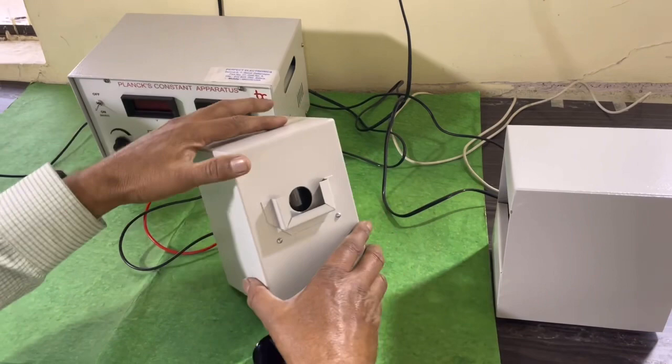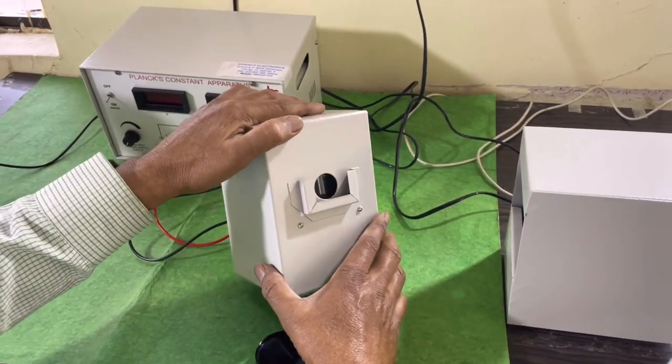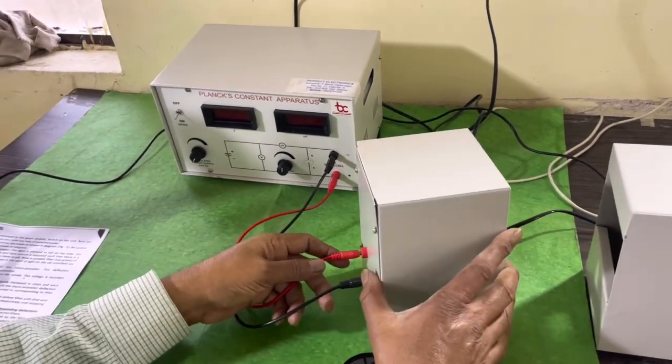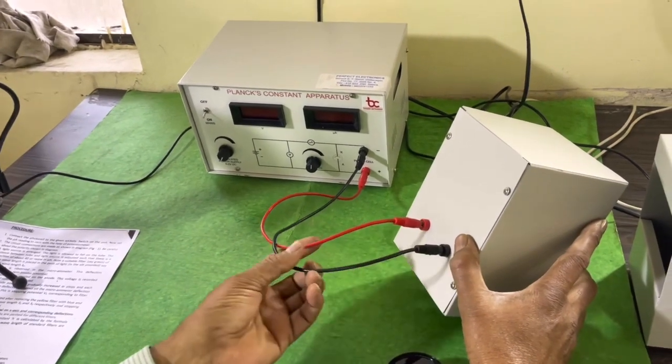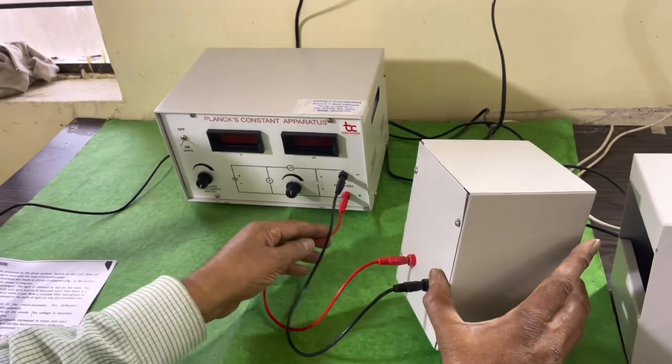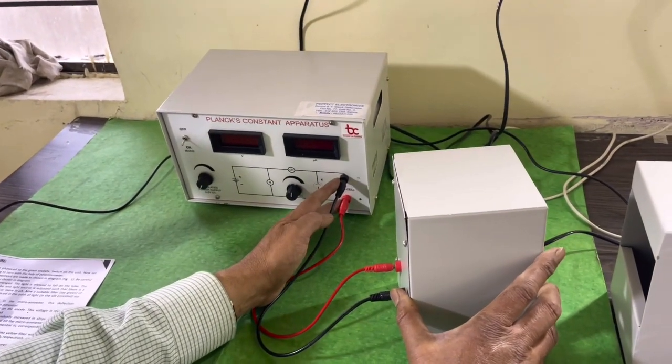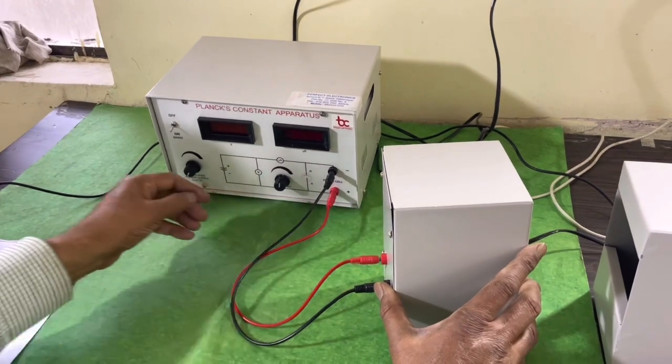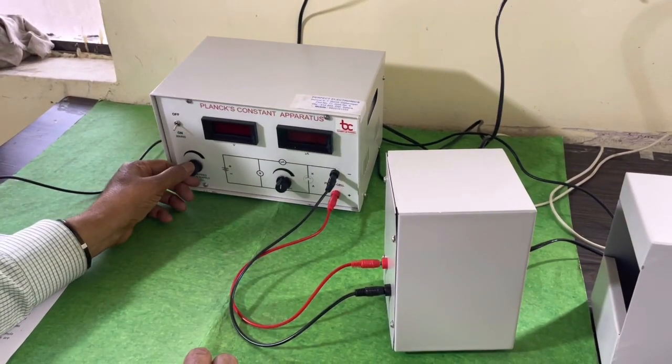This is the photocell connected here whose output is connected here, and this voltage developed by the photocell is applied to the Planck's constant apparatus. Here is the on-off switch and this is variable.